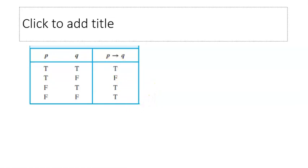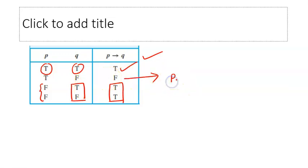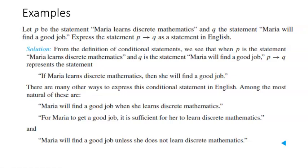Truth tables are important, and the truth table for the conditional statement is slightly counterintuitive. If p is true and q is true, then p implies q is true. In the two cases when p is false, irrespective of the value of q, p implies q is also true. So p implies q is false in only one case: when p is true and q is false. In all other cases it remains true.